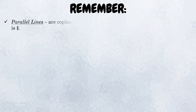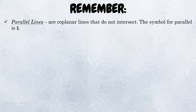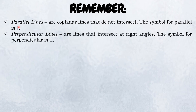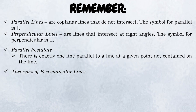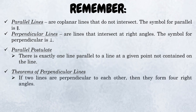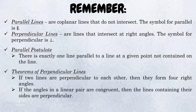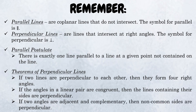Let us now summarize what we have learned. Parallel lines are coplanar lines that do not intersect. The symbol for parallel is two vertical lines. Perpendicular lines are lines that intersect at right angles, with its own symbol. We have one parallel postulate: there is exactly one line parallel to a given line at a given point not on the line. We also have three theorems on perpendicular lines: first, if two lines are perpendicular, they form four right angles; second, if angles in a linear pair are congruent, the lines are perpendicular; and third, if two angles are adjacent and complementary, their non-common sides are perpendicular.